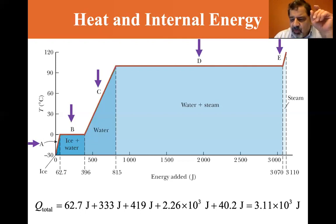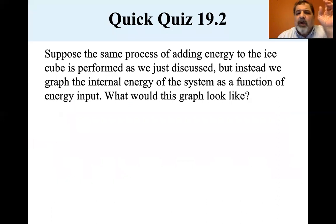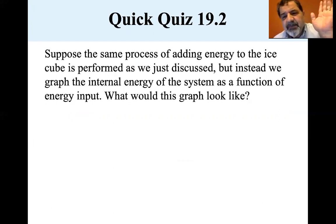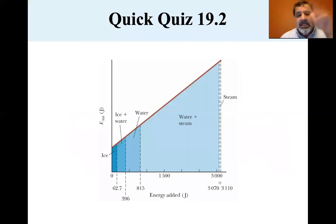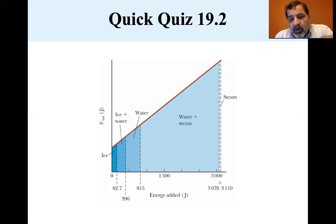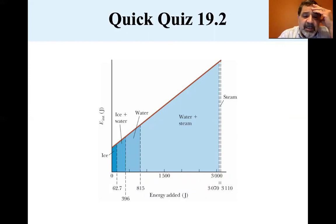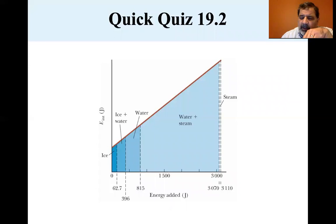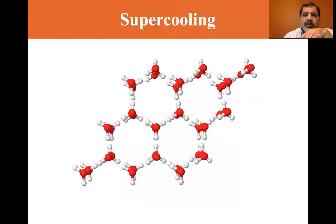Suppose we graph the internal energy of the system as a function of energy input. What does this graph look like? It's a straight line. The bottom axis is energy added up to 3110 joules total, and since internal energy increases proportionally, the slope of the line is one — a straight diagonal line from ice all the way through to steam.